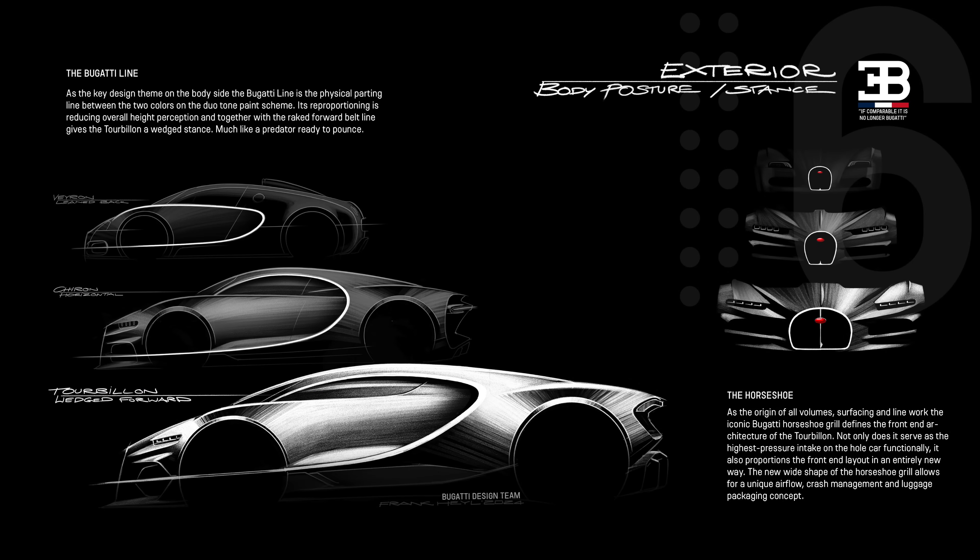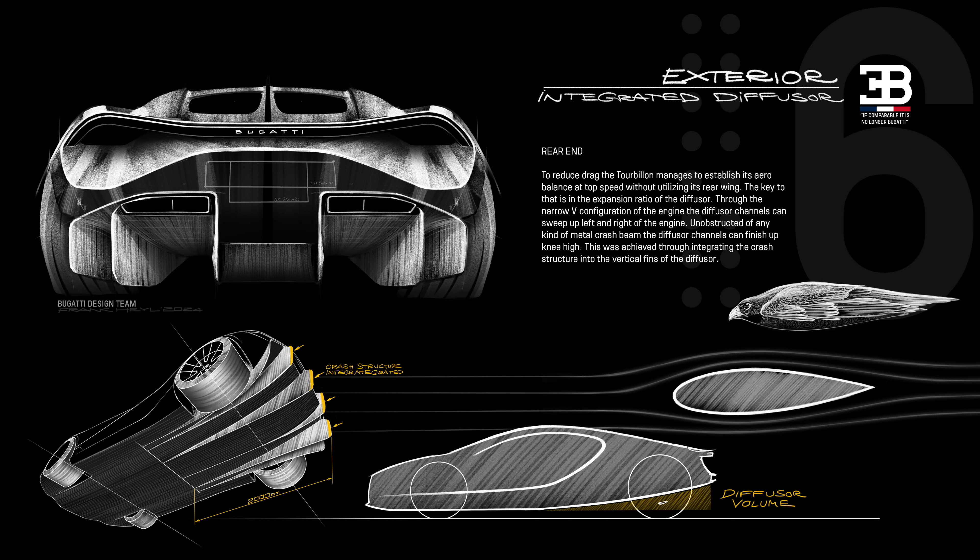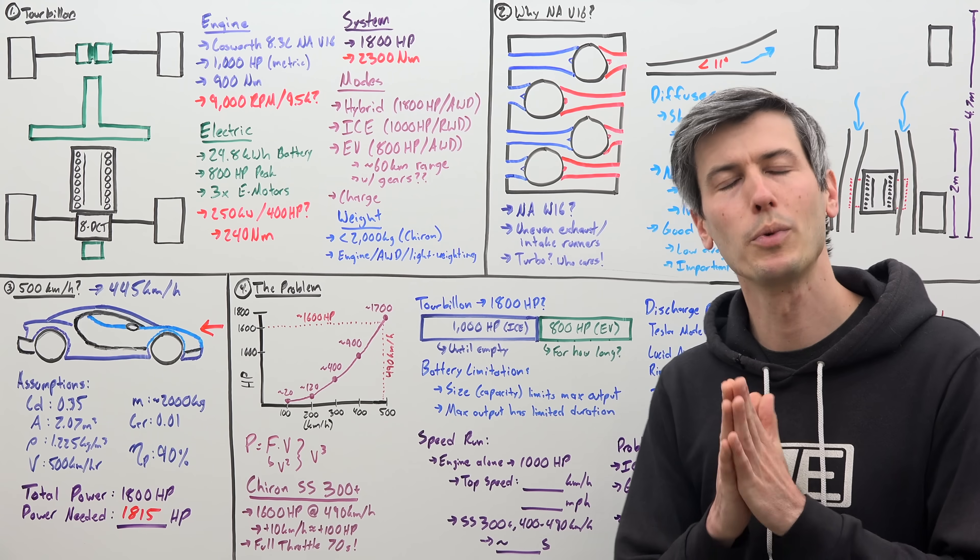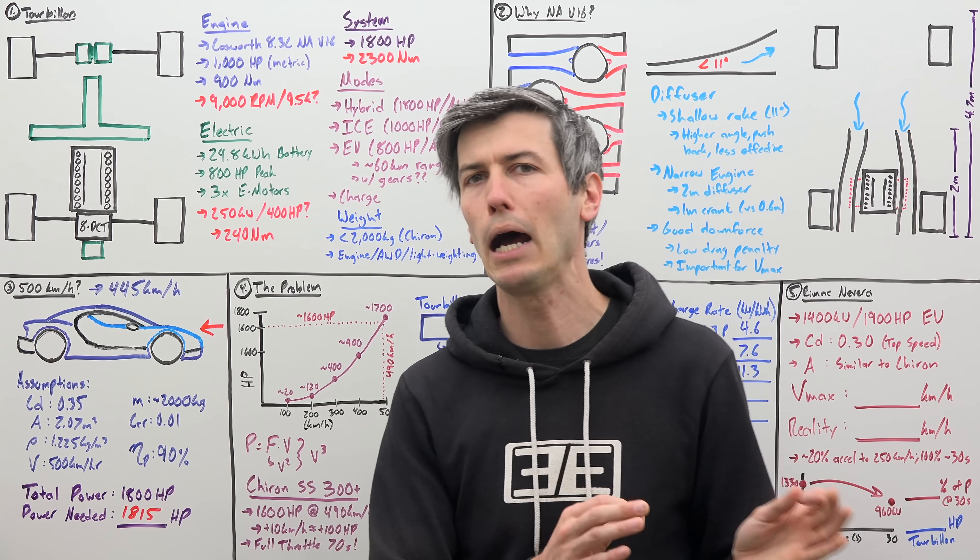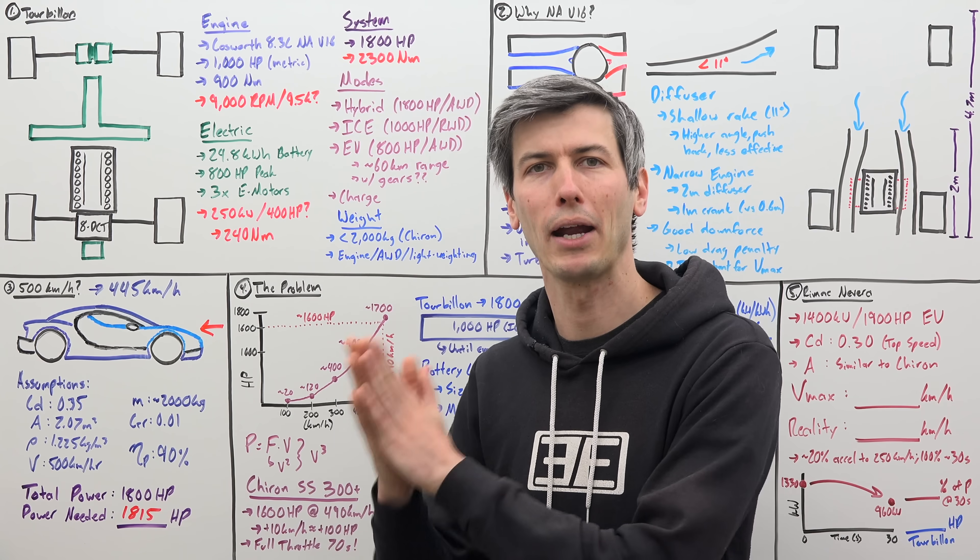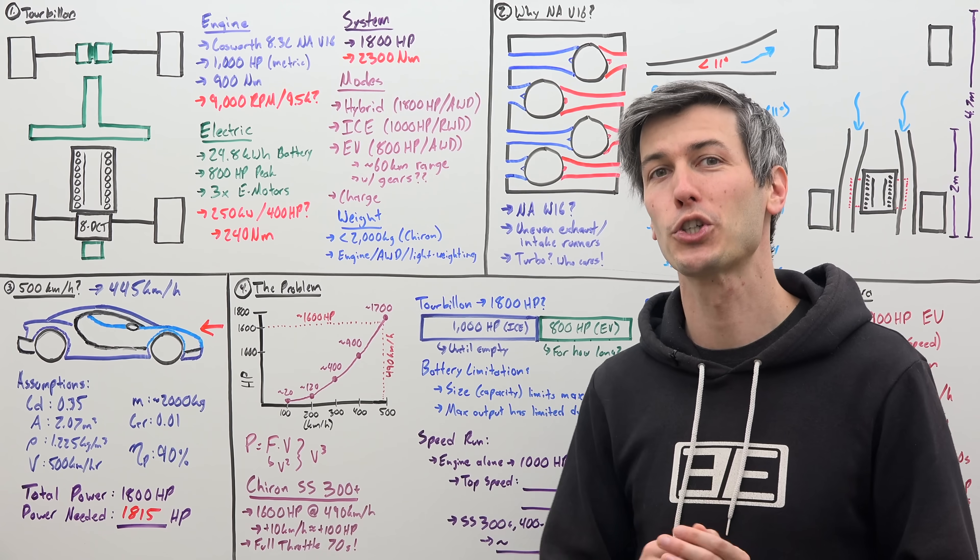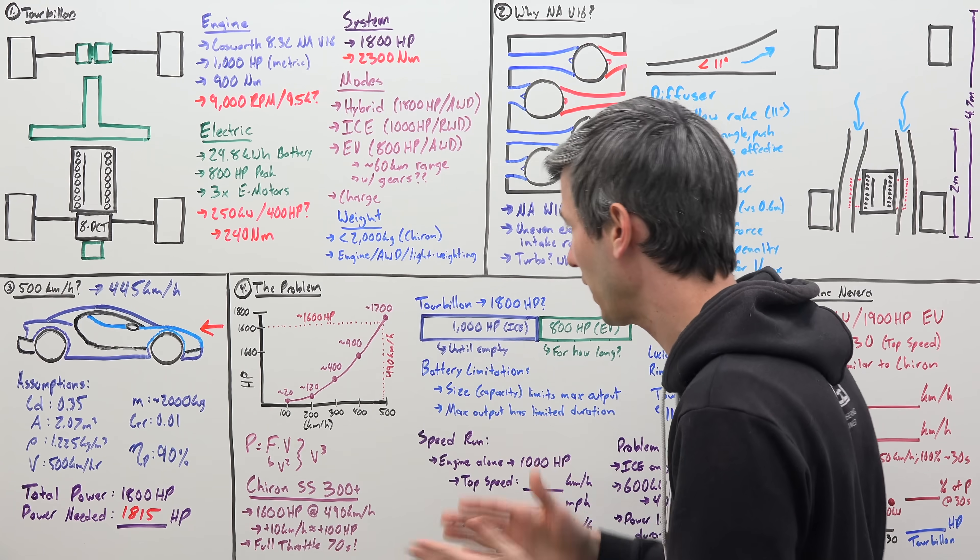People are used to discussing top speed as it relates to combustion cars, but with EVs, it's a different story. All right, so there's a bit of logic we need to work through. So the first thing we need to understand is the power required to overcome aerodynamic drag is a function of velocity cubed. So what the heck does this mean?